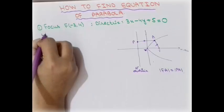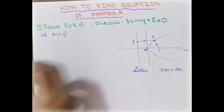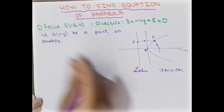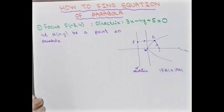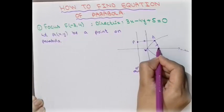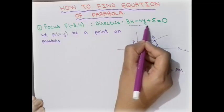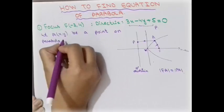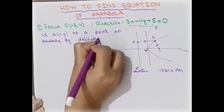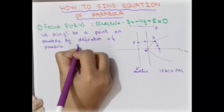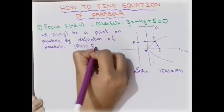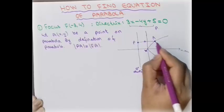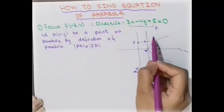Let point A have coordinates (x, y) and be a point on the parabola. As I drew this parabola in a rough sketch to recall the concept: here is point F which is the focus, and the given directrix line is P. By the definition of the parabola, the distance PA equals the distance FA. Our first aim is to calculate the distance FA.